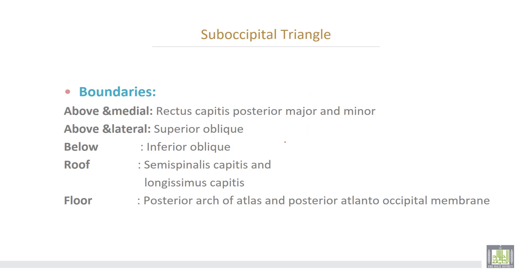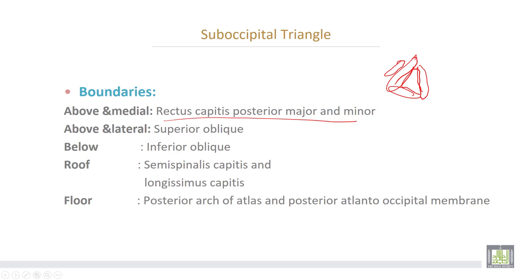Suboccipital triangle: bounded above and medially by rectus capitis posterior major and minor — this is rectus capitis posterior major and this is rectus capitis posterior minor. Above and laterally by the superior oblique, and below by the inferior oblique muscle. The roof is formed by the posterior arch of the atlas and the posterior atlanto-occipital membrane.